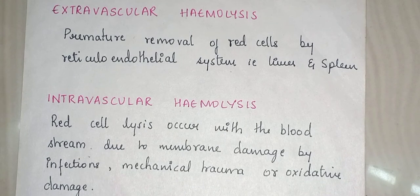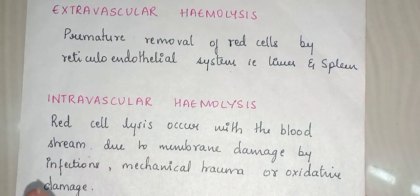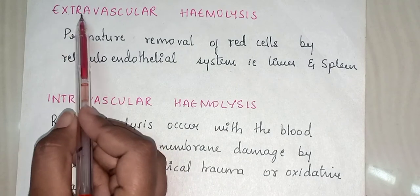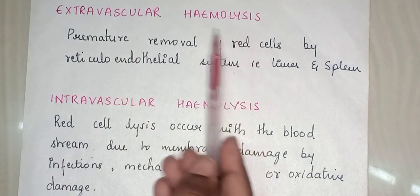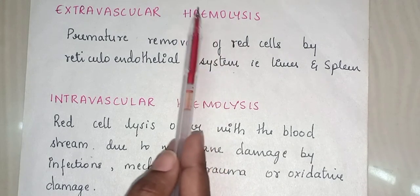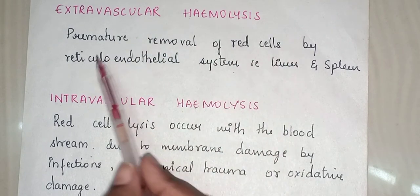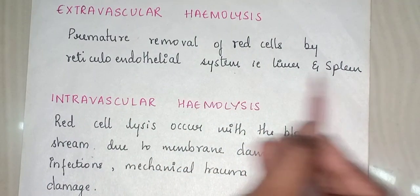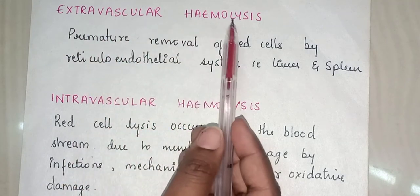Whenever you hear the term hemolytic anemia, we usually hear about extravascular hemolysis and intravascular hemolysis. In extravascular hemolysis, 'extra' means outside the vessel, so extravascular hemolysis means the destruction of RBCs taking place outside the vessels — it is the premature removal or destruction of RBCs by reticuloendothelial cells of the liver and spleen.